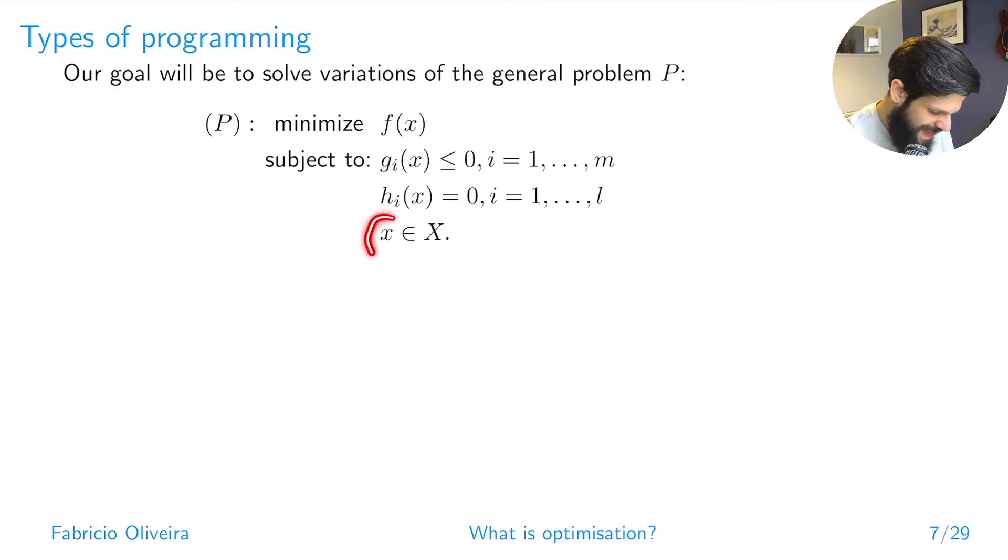We also have this set X here that is a shorthand for the constraints that are more related to the domain of the variable x. We'll see later on that sometimes we require that our variables are non-negative, quite often in real-world problems actually. We might also require that our variables are integer or binary. This is what we encapsulate in this set X you see here.